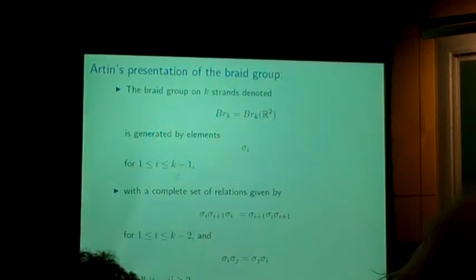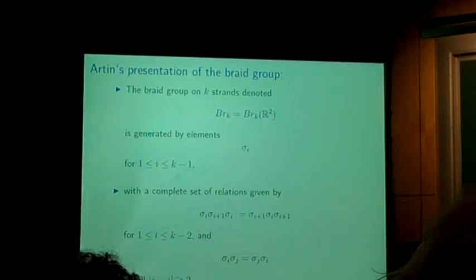Artin saw that there were two relations. The first one is that sigma_i sigma_{i+1} sigma_i equals sigma_{i+1} sigma_i sigma_{i+1}. If I had some stage props here I would actually make the braids to do this — you can go home and try that and you'll see it works very easily. And then the relation that sigma_i and sigma_j commute if i and j differ by two is also satisfied. Artin's theorem is that that's a presentation — the braid group is generated by these braids that swap the i and i+1 strand, satisfying those relations.